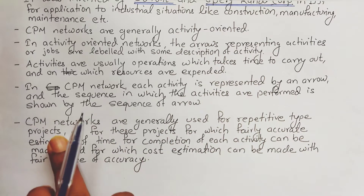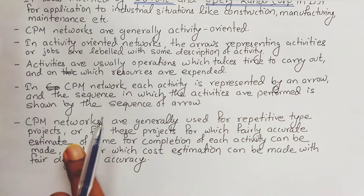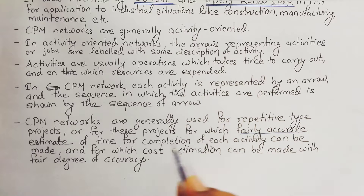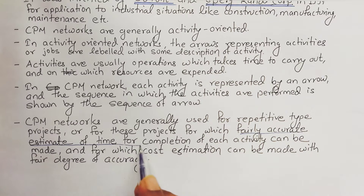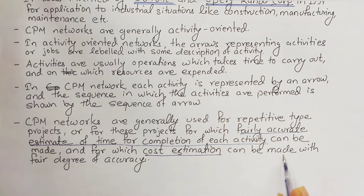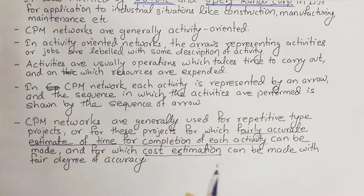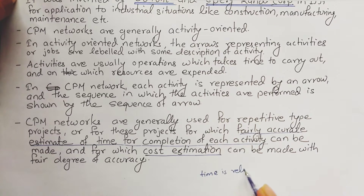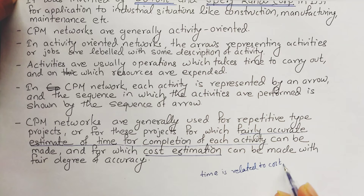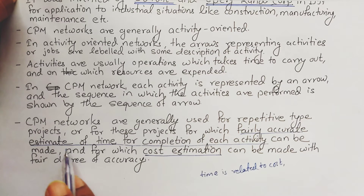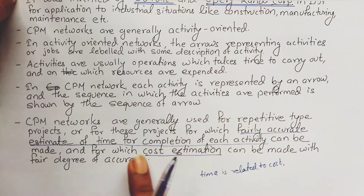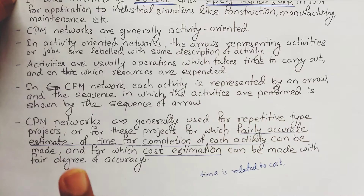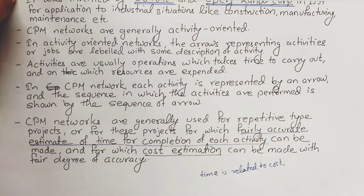CPM networks are generally used for repetitive type projects or for projects for which a fairly accurate estimate of time for completion of each activity can be made. In CPM network, time is related to cost. So CPM is used when a fairly accurate time estimate is required, and also when accurate cost estimation can be made for any activity.